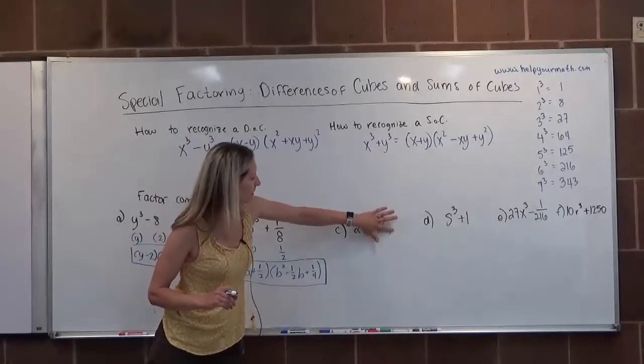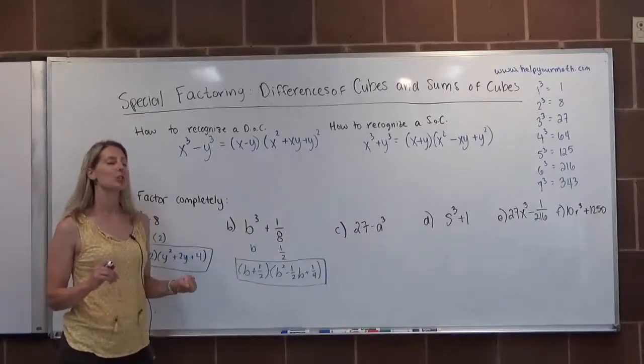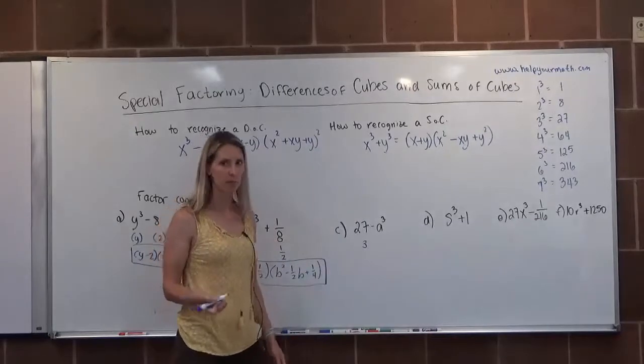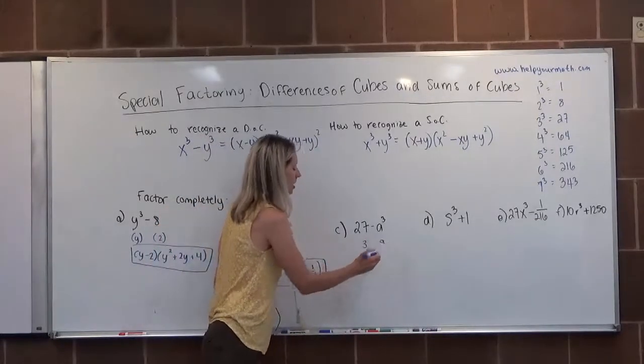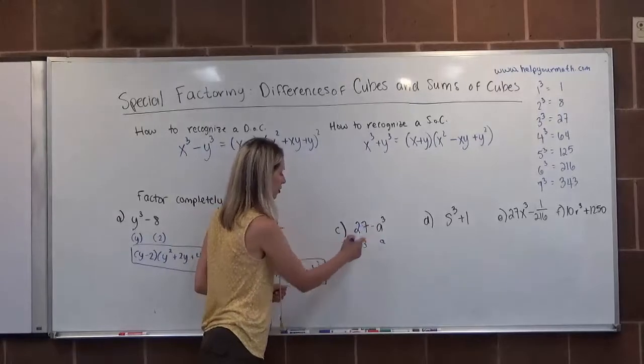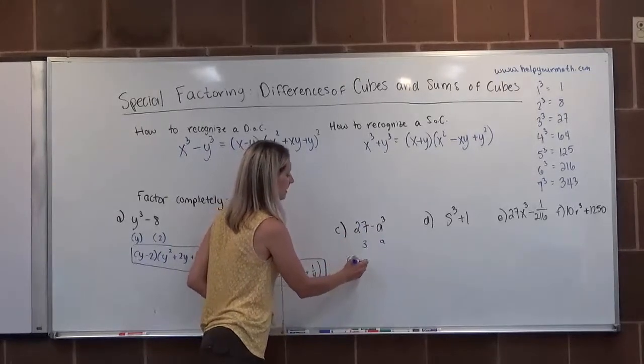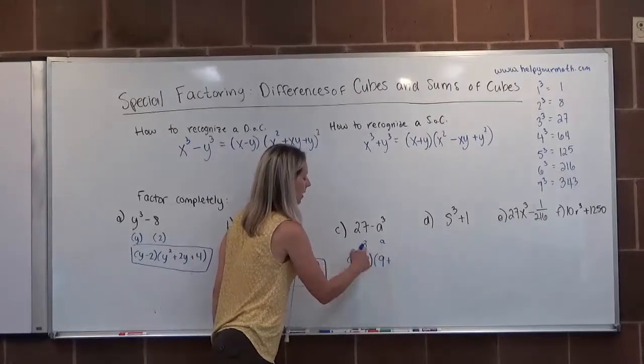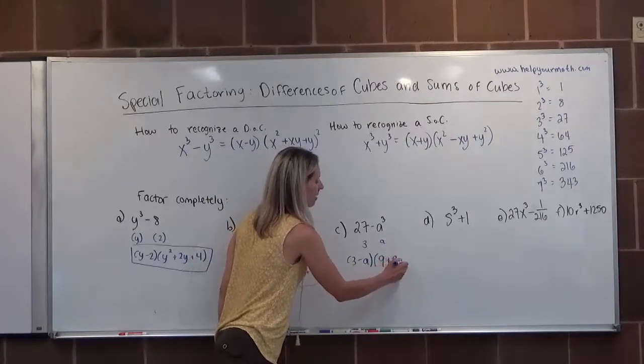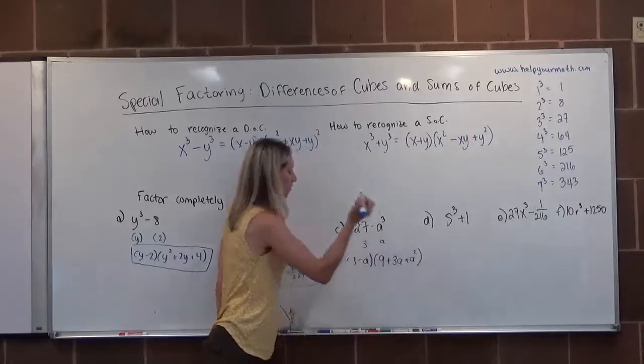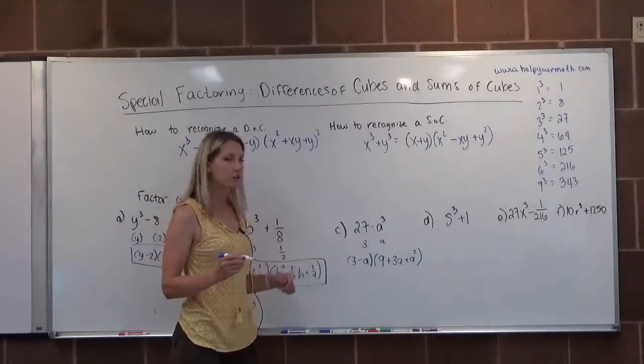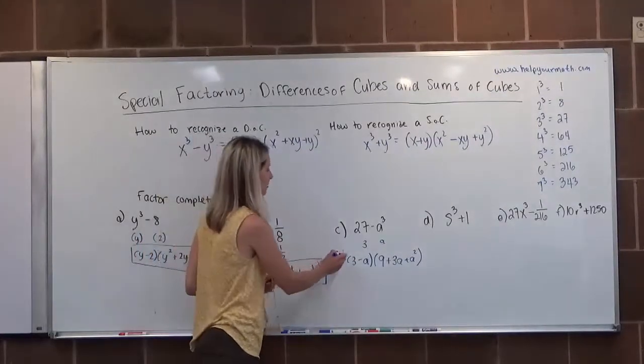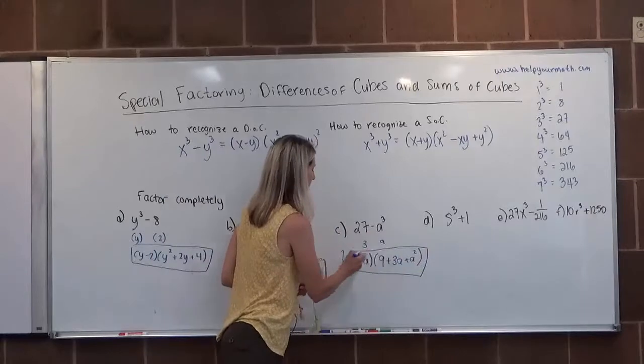Letter C, 27 is a perfect cube, its root is 3. A cubed is a perfect cube, its root is a. So this one would factor into, this is subtraction, so it's going to be (3 - a) times (9 + 3a + a²). This is not factorable. This would be the final factoring of 27 minus a cubed.